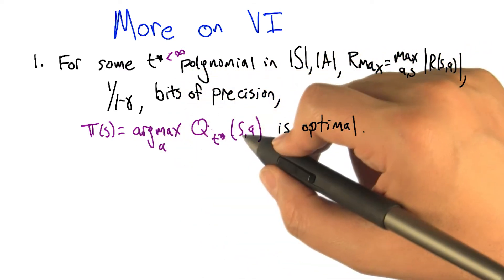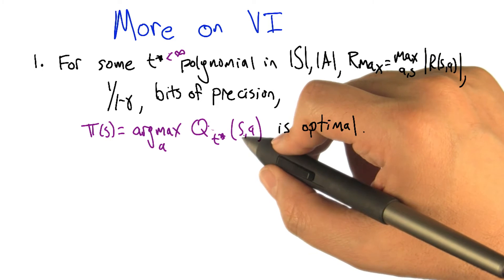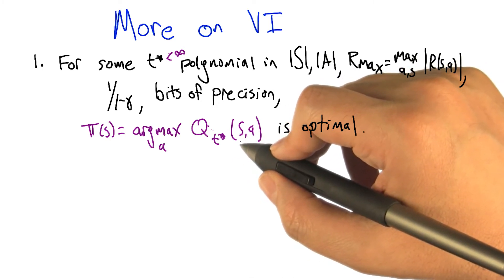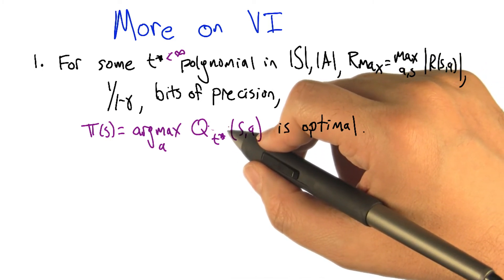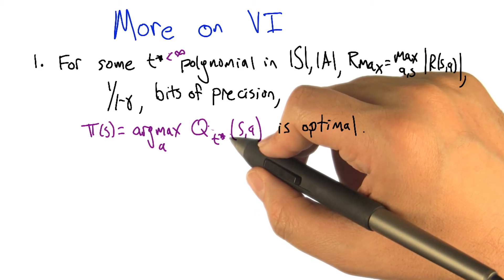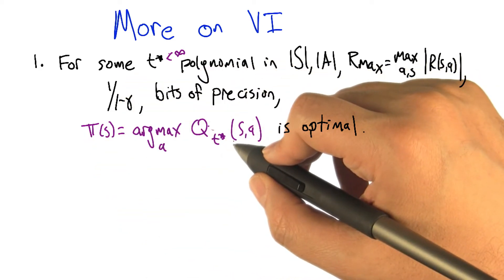But what this is saying is that there is some time before infinity where we get a q function that's close enough so that if you do the greedy policy with respect to it, it really is optimal. Like all the way 100% optimal.